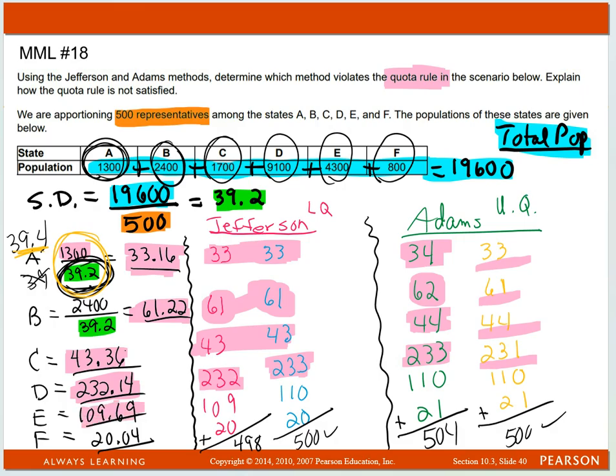These are both the upper quota. And then 20.04, it has to either be 20 or 21: 20, 20, 21, 21.